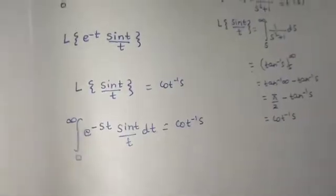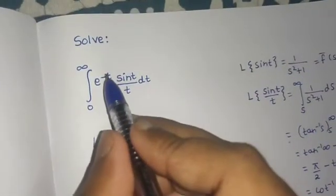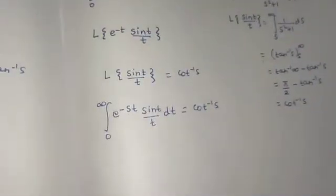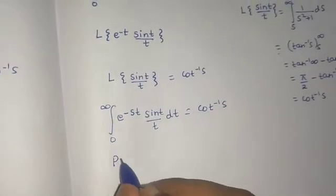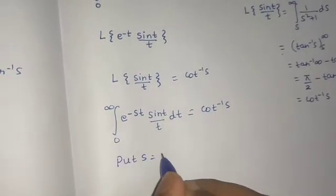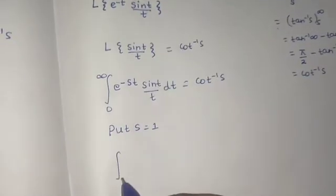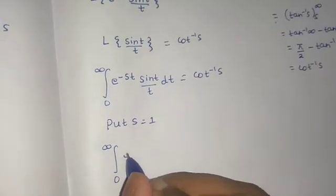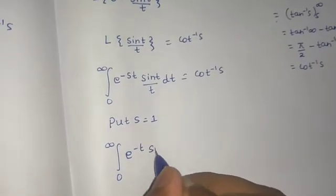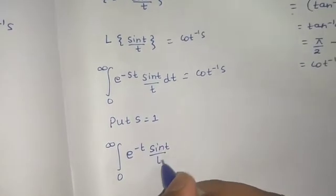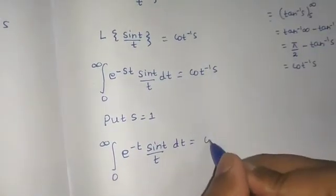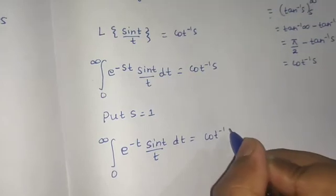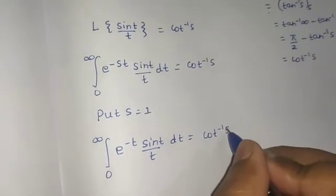Now look at this carefully. We need the factor e^(-t) only — we don't want the general s. So just put s = 1. When you put s = 1, the LHS becomes the integral from 0 to infinity of e^(-t) sin(t)/t dt, and on the RHS you also put s = 1, giving cot⁻¹(1).